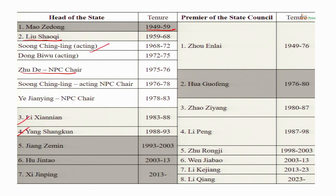The first premier of China was Zhou Enlai, the legendary leader and foreign policy expert. He was the longest serving premier from 1949 until his death in 1976, during which time he directly controlled the foreign affairs of China. After his death, he was replaced by Hua Guofeng.